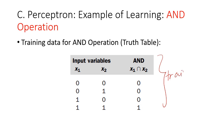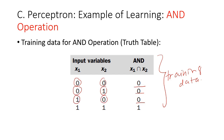This is a set of data for an AND operation. We want the perceptron to produce 0 when input 1 is 0 and input 2 is 0; produce 0 if input 1 is 0 and input 2 is 1; produce 0 if input 1 is 1 and input 2 is 0; and produce 1 if input 1 is 1 and input 2 is 1. This is basically the truth table for an AND operation.